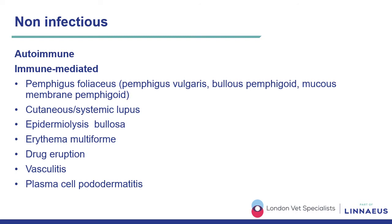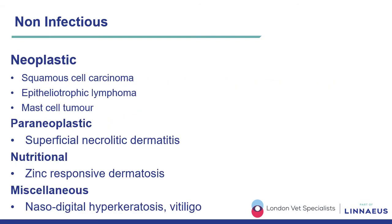We also have differentials consisting of vasculopathies and vasculitis, which often cause damage to the footpads and claws, and plasma cell pododermatitis in feline patients. Neoplastic conditions include squamous cell carcinoma, epitheliotropic lymphoma, or mast cell tumours, while paraneoplastic conditions include superficial necrolytic dermatitis, also called hepatocutaneous syndrome, and nutritional conditions such as zinc-responsive dermatosis, often described in Nordic breeds. Miscellaneous conditions include naso-digital hyperkeratosis or vitiligo.